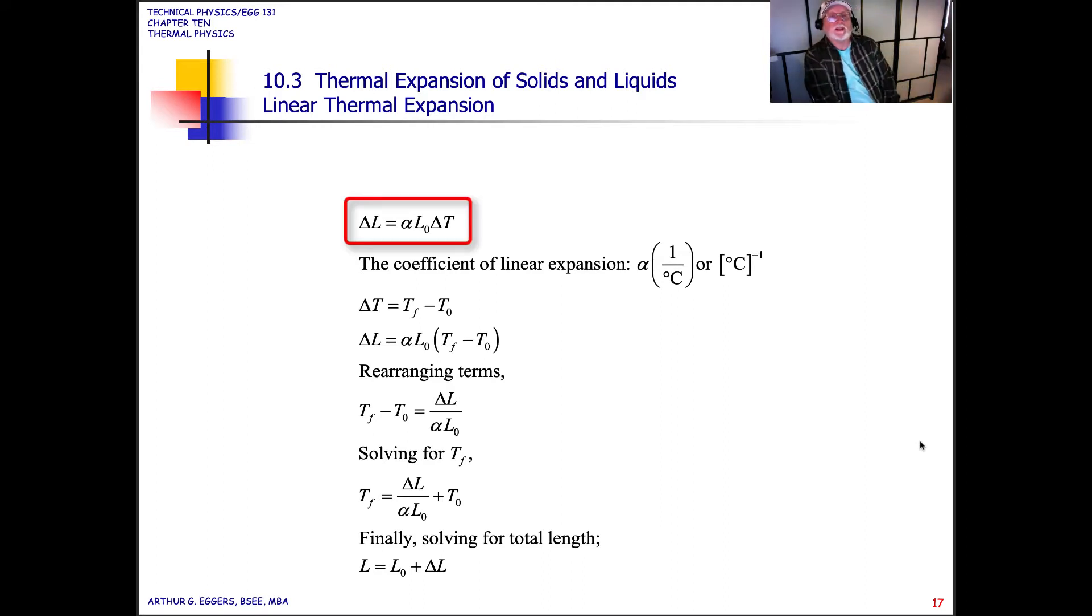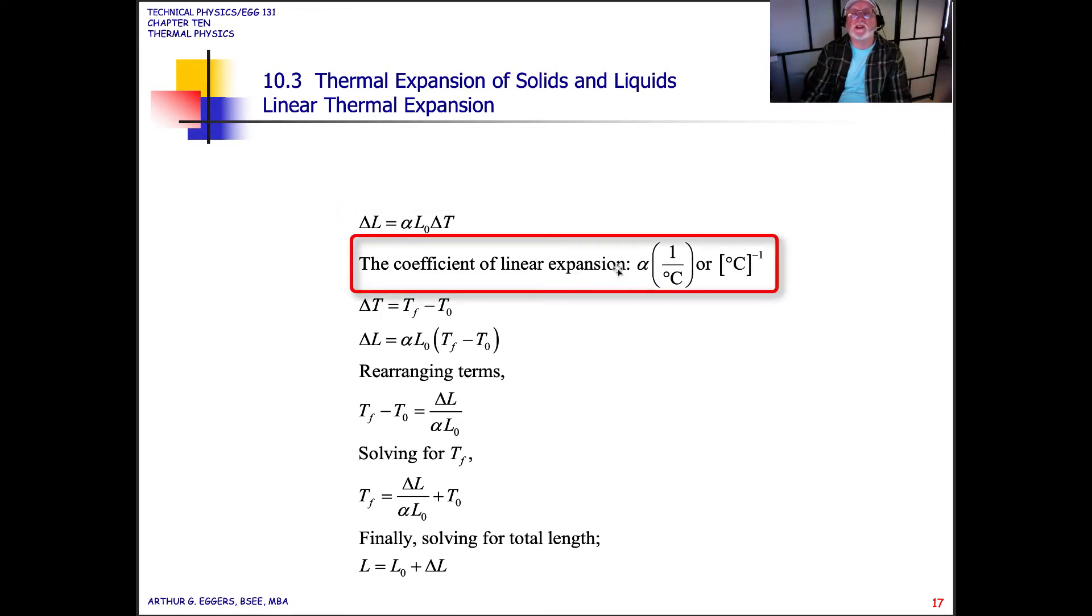So if we look at the relationship, let's look at linear thermal expansion, like a long cylindrical rod or bar. The definition says that any change in length is equal to a coefficient of linear expansion times the initial length times the change in temperature. So the coefficient of linear expansion, alpha, which is in per degree Celsius or degrees to the minus one. Keep that handy for when you're doing your reductions because you may need to be moving your degree relationship in and out of the numerator and denominator.